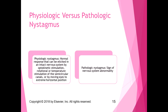Physiological nystagmus is the normal response that can be elicited by an intact nervous system through optokinetic stimulation, rotational or temperature stimulation of the semicircular canals — for example, running cold or hot water on the semicircular canals. Moving the eyes to an extreme horizontal position can also trigger physiological nystagmus. Pathological nystagmus, on the other hand, is a sign of nervous system abnormality — a problem in the visual system, vestibular system, or possibly the brainstem.